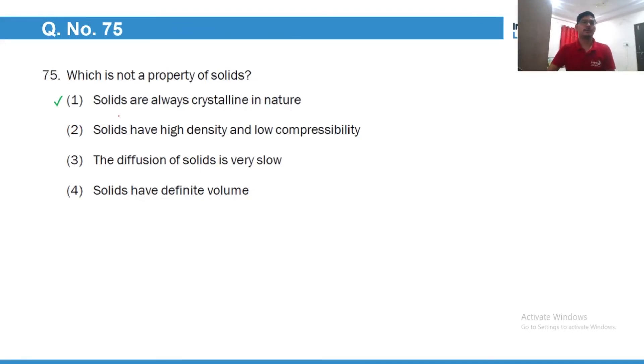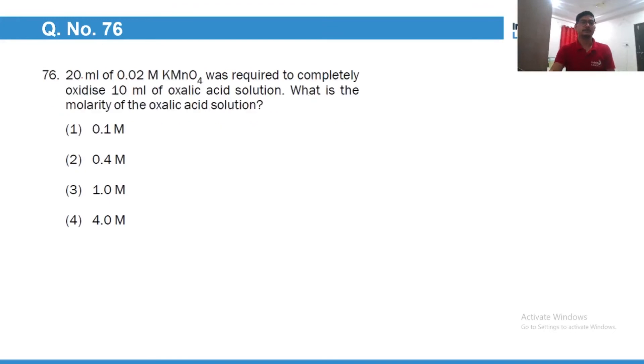Which of the following is not a property of solids? Solids are all crystalline, no they can also be amorphous. KMnO4 and oxalic acid are reacting. So in any titration the gram equivalents are always equal. So gram equivalents of KMnO4 would be equal to the gram equivalents of oxalic acid.